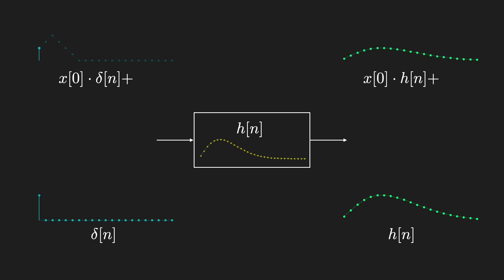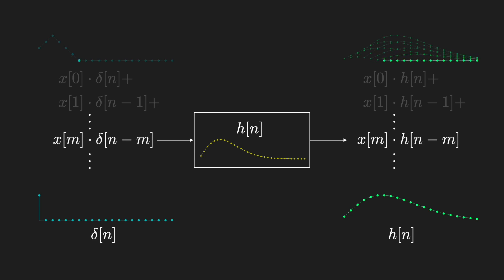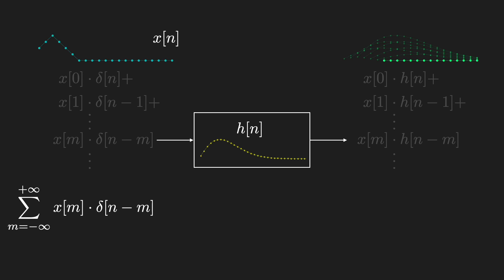With linearity and time invariance, the output to the next sample, x of 1 times delta of n-1, is just the impulse response h times x of 1 shifted by one sample. Now, this is true for all samples of x. In this way, any arbitrary input signal can be deconstructed into a set of scaled and shifted delta functions. So then, the output of an LTI system is just a combination of correspondingly scaled and shifted impulse responses.